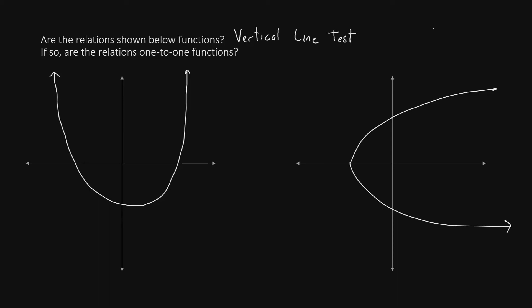Let's start with the graph on the left. If we draw a vertical line through here, it crosses only one time, at the position where I've placed the star. If you examine the rest of the graph, no matter where we draw a vertical line, it will only ever cross one time. So we can say this graph passes the vertical line test, and therefore this relation is a function.